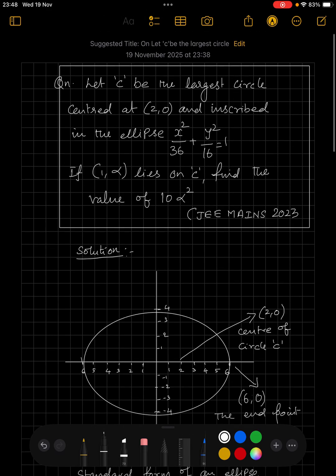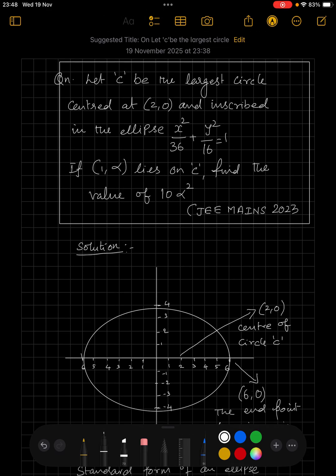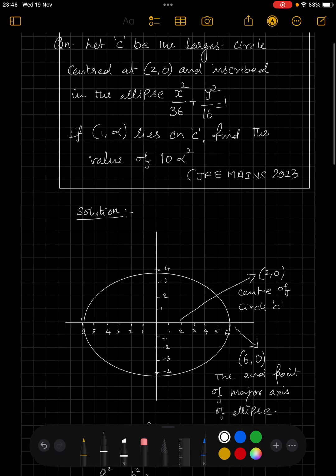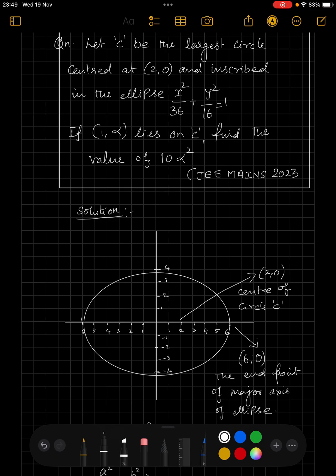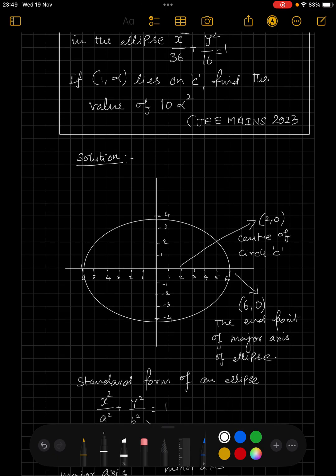So what will be the radius of the circle? The circle is the largest possible circle because it is inscribed in the ellipse. Largest possible means it should be touching the edge. So in this case, it should be touching the end point of the major axis of the ellipse that is 6 comma 0.